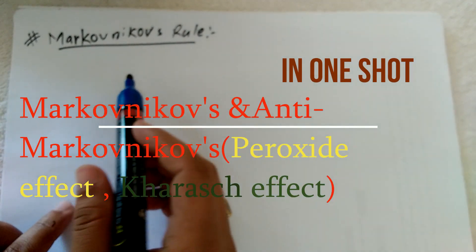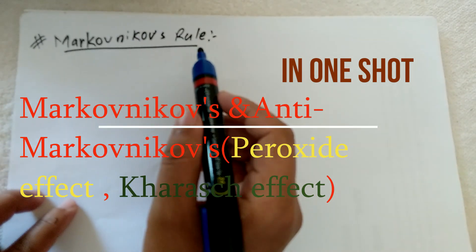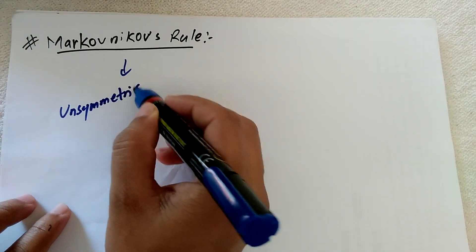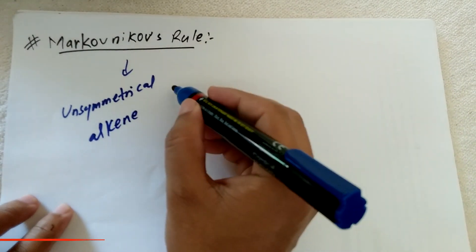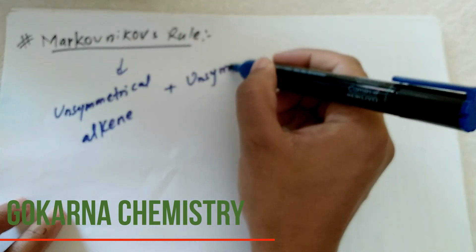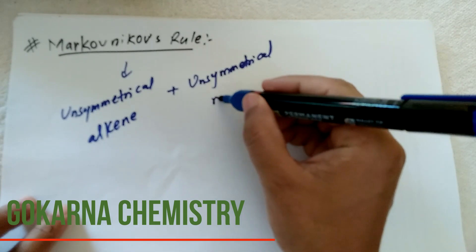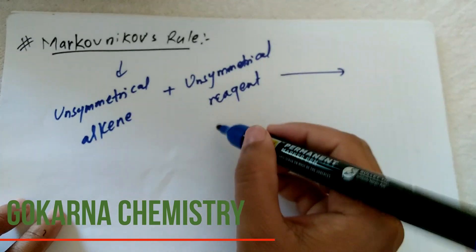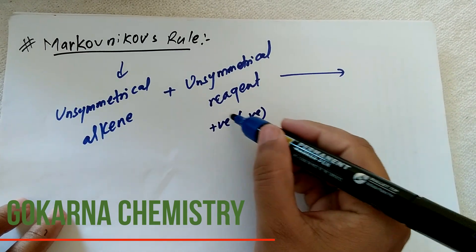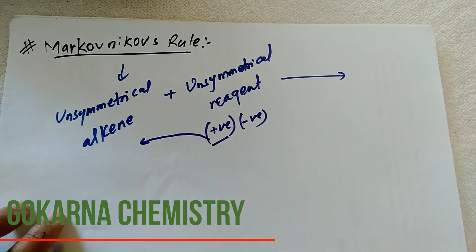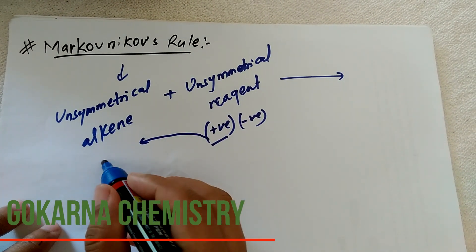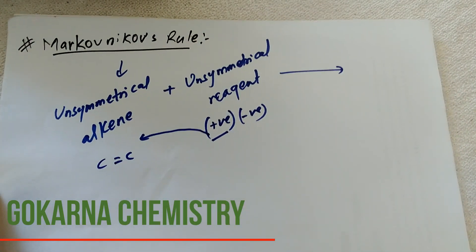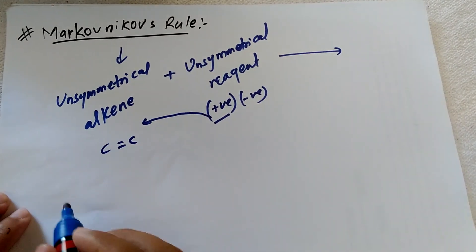Hello students, today we are going to study Markovnikov's rule and anti-Markovnikov's rule. In Markovnikov's rule, when an unsymmetrical alkene reacts with an unsymmetrical reagent, the positive part of the reagent — which contains a positive and negative part — bonds with that double-bonded carbon atom which contains the higher number of hydrogens, and a haloalkane will form.